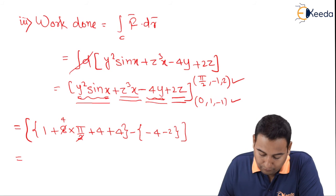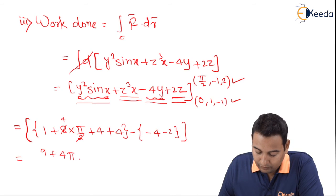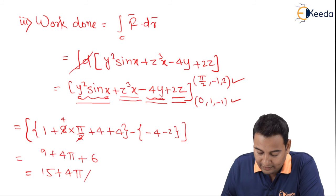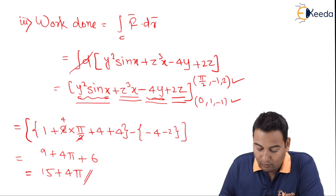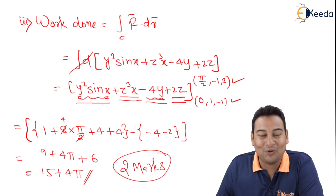Work done equals (9 + 4π) minus (−6) = 15 + 4π. This is the required answer for work done. Two marks for this, giving a total of six marks. Hope you understood, thank you.